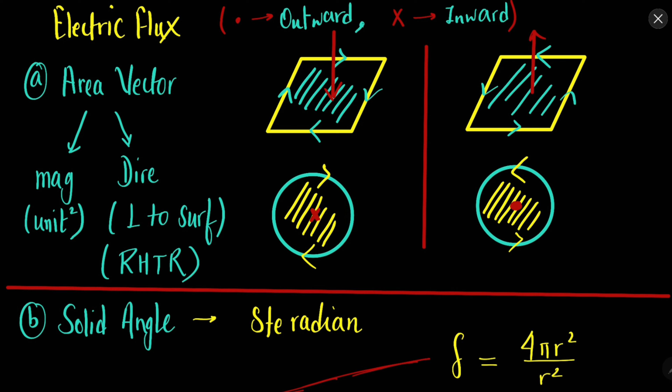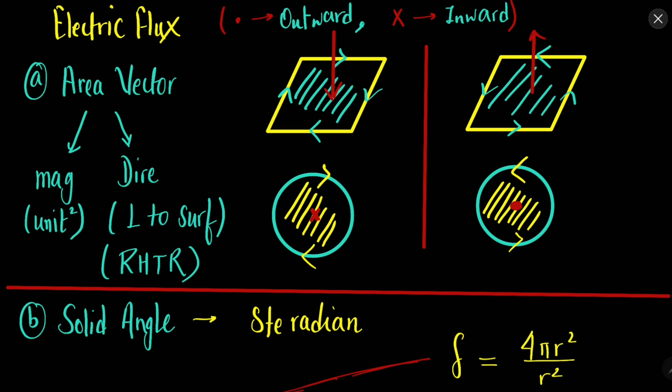In order to understand the concept of electric flux, let us first try to understand the concept of area. If I ask you whether area is a scalar or a vector, you might answer that area is a scalar quantity because you might not have studied about any direction while studying about area. You might have heard that the area of a rectangle is 2 meter square or 2 centimeter square — no direction, only magnitude. But in fact, area is considered to be a vector quantity.